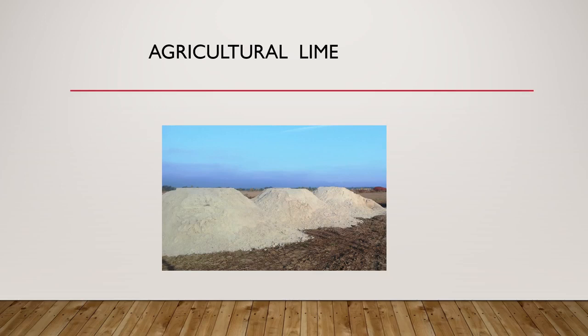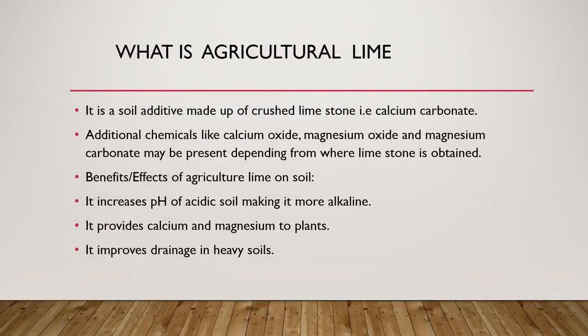Agricultural Lime. Dear students, you can see a white solid in the picture. This white solid is agricultural lime. What is agricultural lime? It is a soil additive made up of crushed limestone, i.e., calcium carbonate. Additional chemicals like calcium oxide, magnesium oxide, and magnesium carbonate may be present depending on where the limestone is obtained.